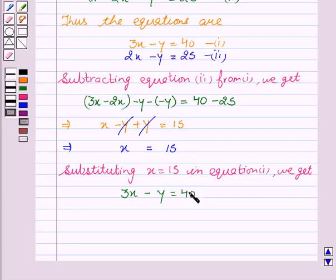We will substitute X equal to 15. This will give us 3 into 15 minus Y equal to 40. This implies minus Y equal to 40 minus 45.